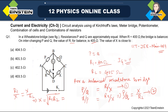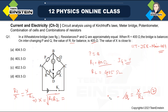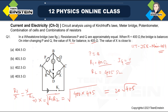Putting R1 = 400 and R2 = 405, the calculation gives X approximately equal to 402.5 ohm. Option C matches our answer, and this is the correct answer. We move on to the next question.